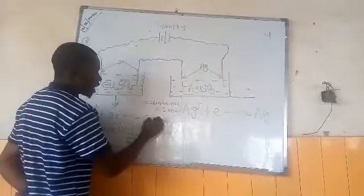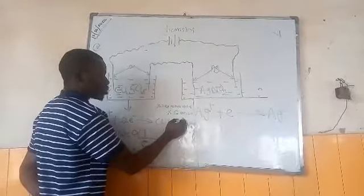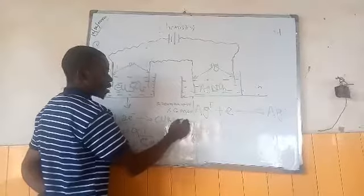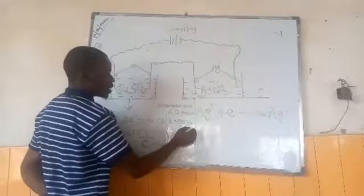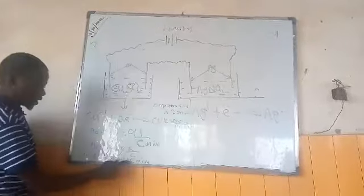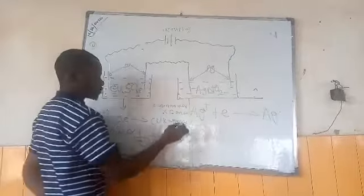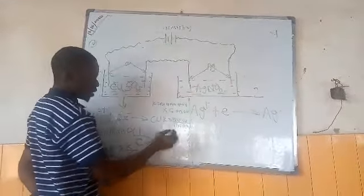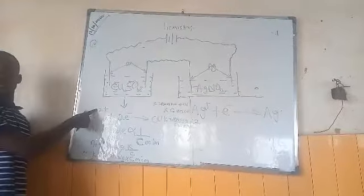Now K will be equal to: number of moles of copper equals mass in grams of copper divided by molar mass of copper, times charge on copper. What is the charge on copper? That is two, because of Cu²⁺.